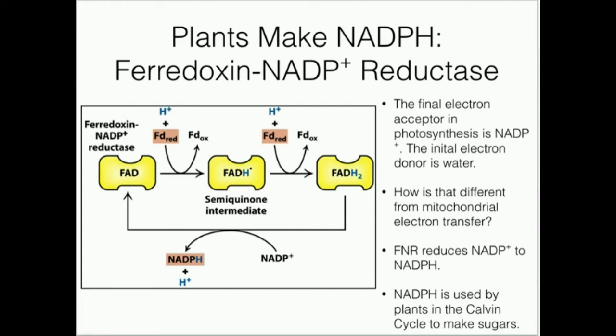It turns out that NADP+ — this electron acceptor — is the final electron acceptor in photosynthesis.